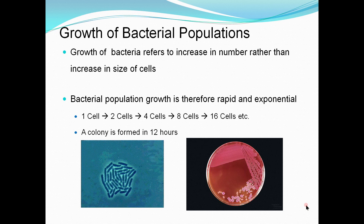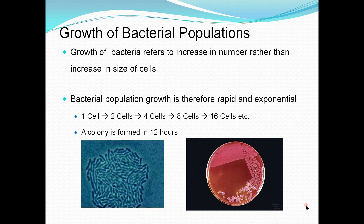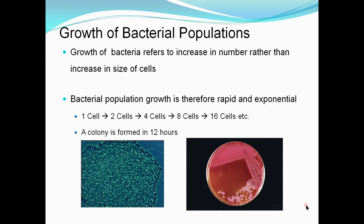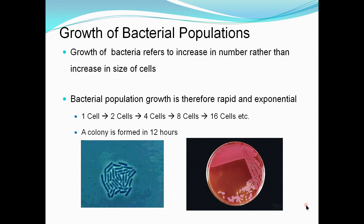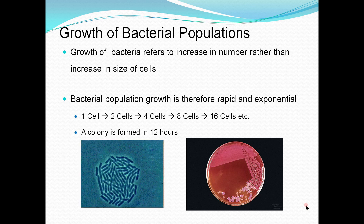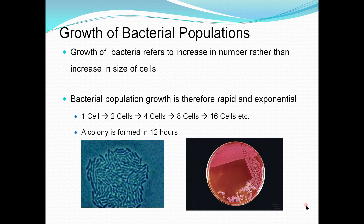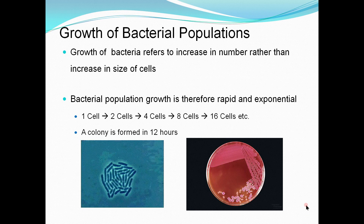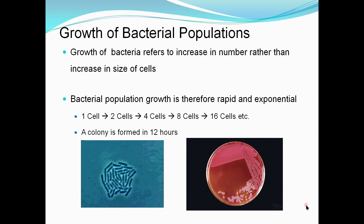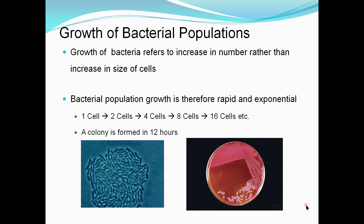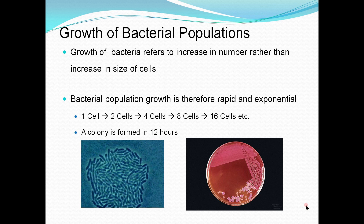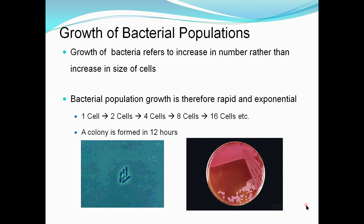First, the bacterial cell reaches its critical mass. As cell components form, the circular double-stranded DNA of the bacteria undergoes replication and new complementary strands are formed within the bacteria, which move towards different poles. As a result of this, the division of the bacteria takes place.